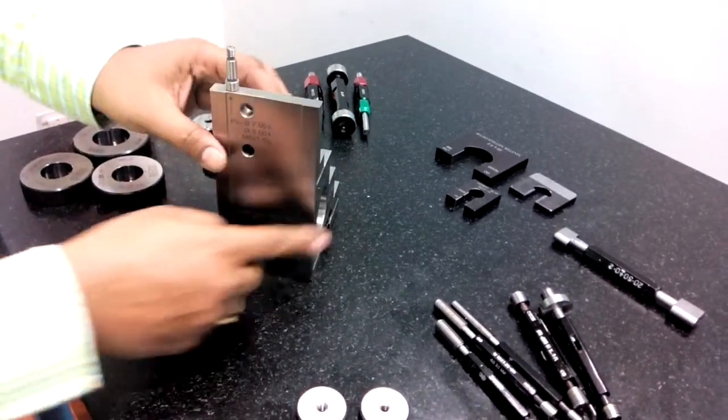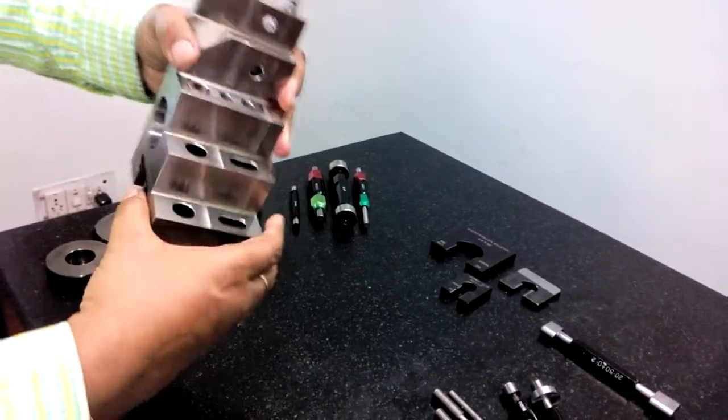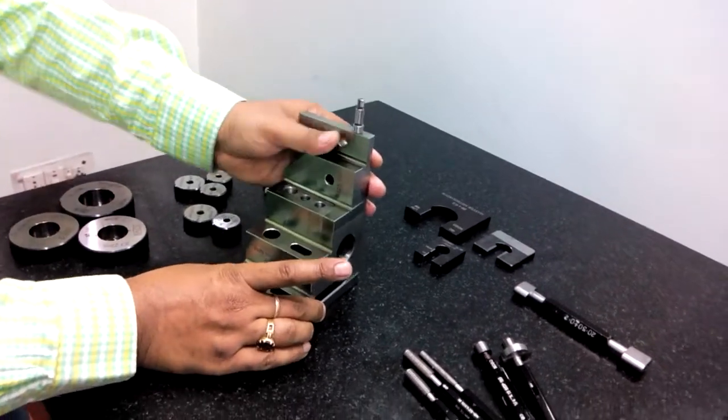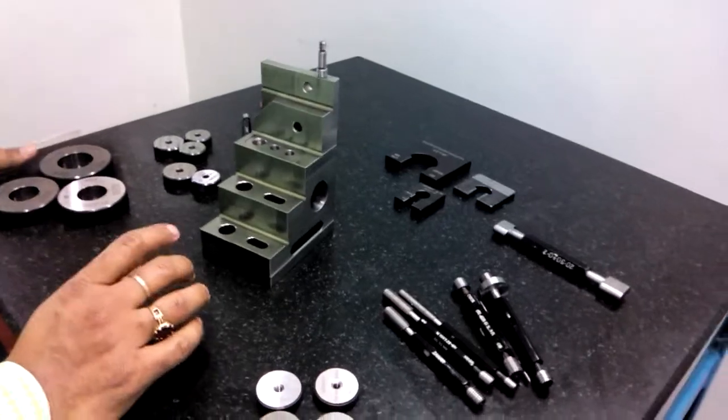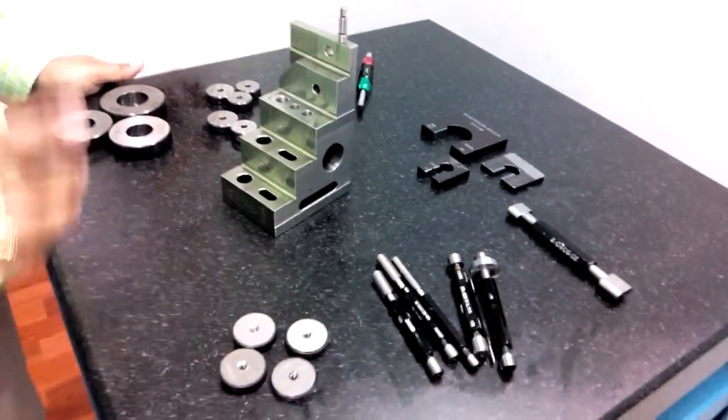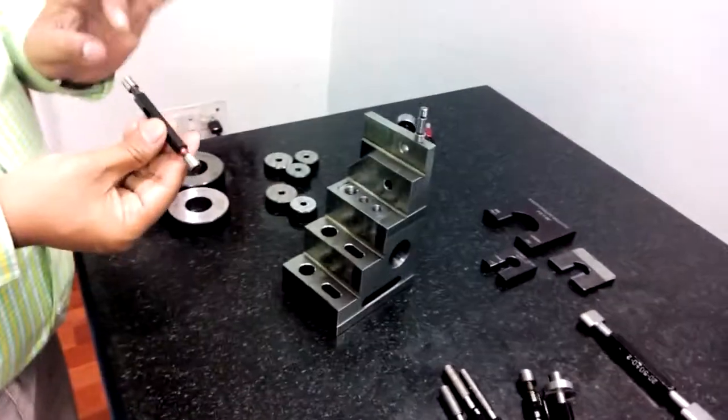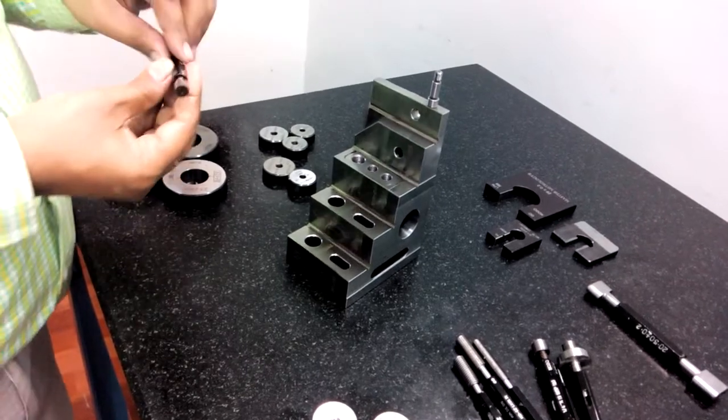Similar with the previous one and have this kind of profile. So I was telling you what is attribute gauging. Attribute gauge means they are go/no-go gauge. Every gauge you will find having go and no-go.